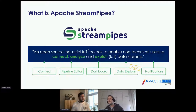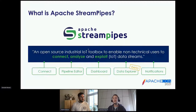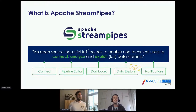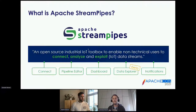What is Apache StreamPipes? It is an open source industrial IoT toolbox which enables non-technical users to connect, analyze, and exploit industrial IoT data streams. By toolbox, we talk of several components that ease working with continuous industrial data streams — like the Connect module where you can connect to industrial assets, and the Pipeline Editor, which you can use to compose pipelines based on data streams, data processors, and sinks. There are also two modules targeted at end users to explore and investigate data, like a live dashboard to follow a live view of what is currently going on.